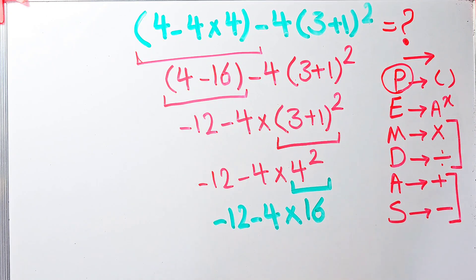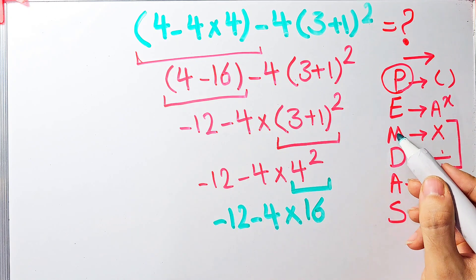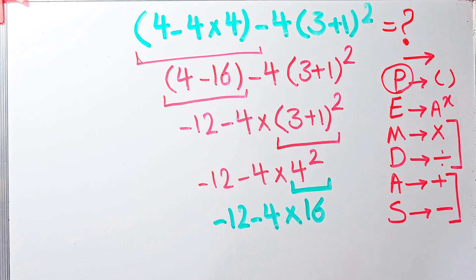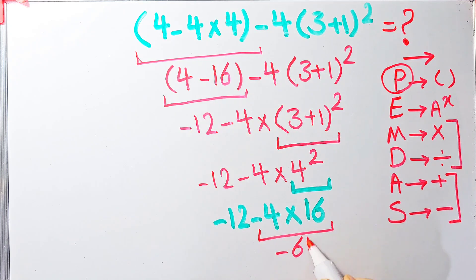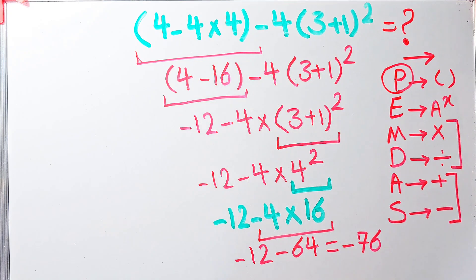Now we have subtraction and multiplication. We simplify the multiplication first because it has higher priority than subtraction. Negative four times sixteen equals negative sixty-four. Now we have negative twelve minus sixty-four, which equals negative seventy-six. The final answer is negative seventy-six.